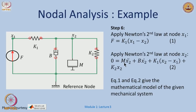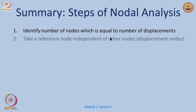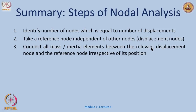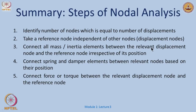To summarize nodal analysis for mechanical systems: first, identify the number of nodes equal to the number of displacements and select a reference node. Then connect all basic elements — mass, spring, damper — according to their positions. If there is an external source generating force or torque, add that to the system. Finally, apply Newton's laws of motion to arrive at the desired equations.